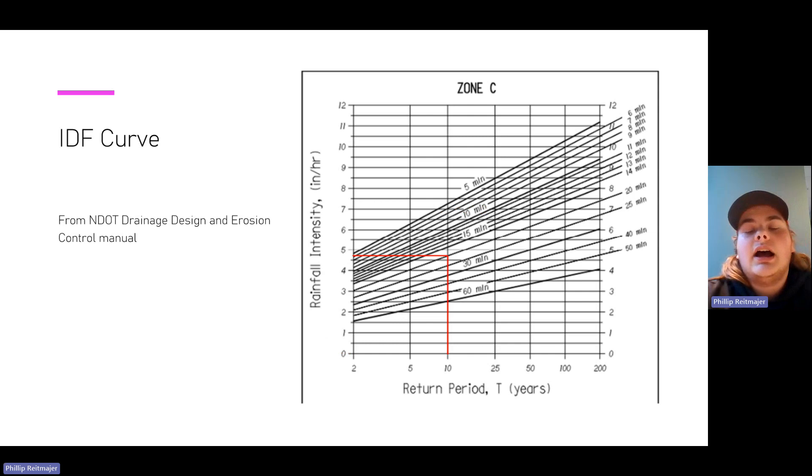So then we have my IDF curve, which I found by going to the NDOT Drainage Design and Erosion Control Manual, finding that Saunders County is in Zone C of Nebraska, then scrolling down to the Zone C IDF curve using the rainfall intensity versus return period. The project wanted a 10-year return period rainfall intensity. So I used the 10-year return period, followed it up to the 20-minute IDF curve, and that gives me about a rainfall intensity of about 4.67 inches an hour.